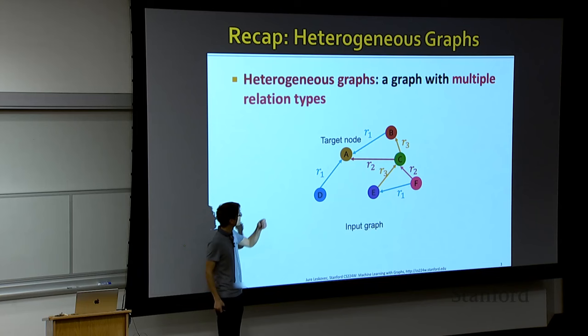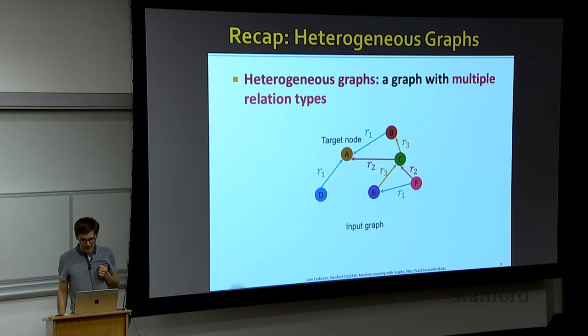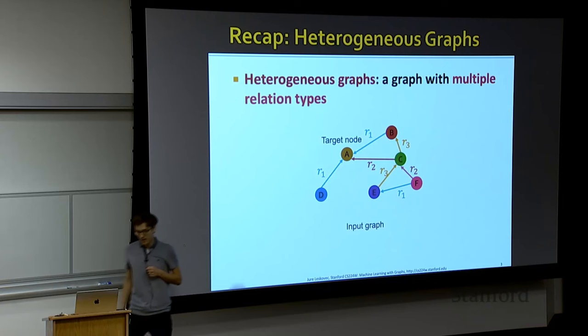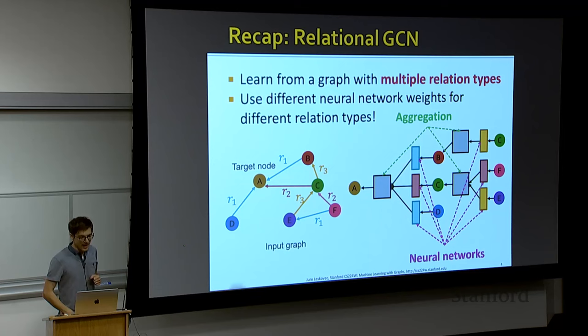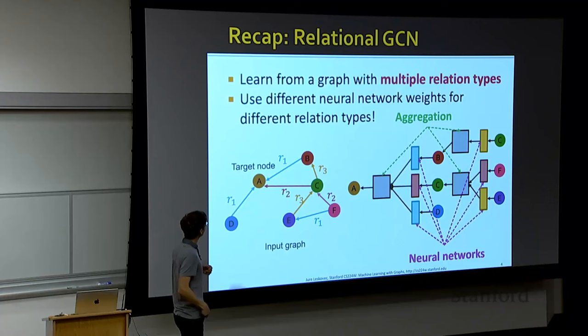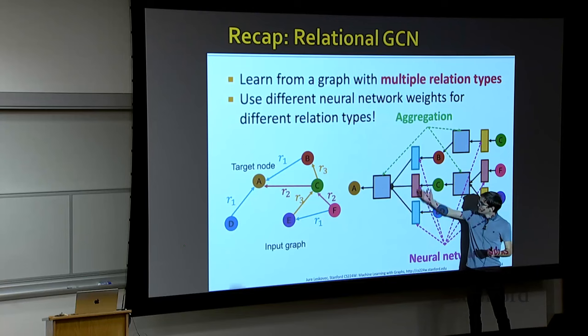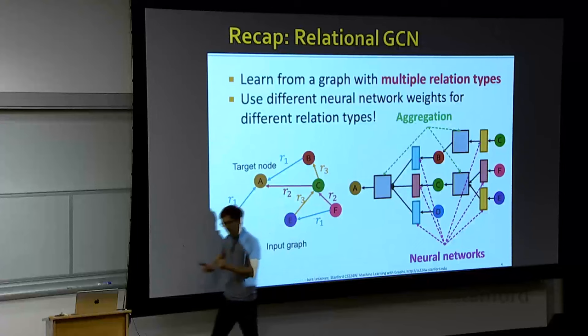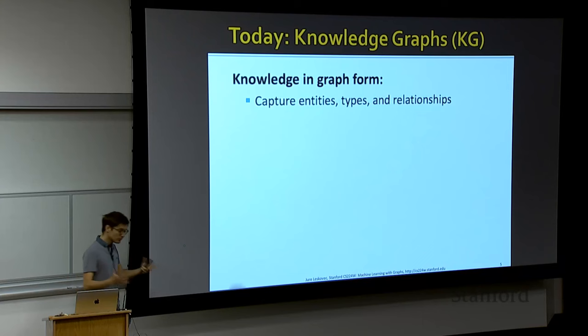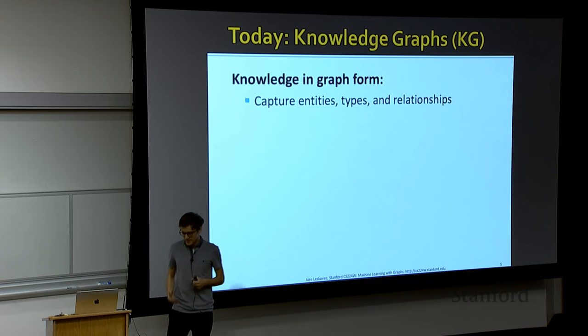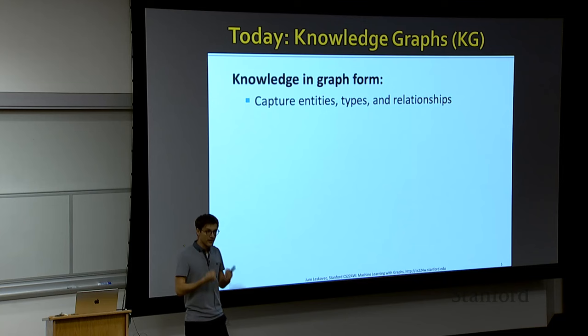What did we talk about last time? We talked about how do we generalize graph neural networks to heterogeneous graphs, where we have edges of different types and nodes potentially of different types. And we talked about relational GCN, where we learn from a graph with multiple relation types and use different neural network weights for different relation types. We basically took the GNN architecture but generalized it so that message passing functions are relation-specific, giving us more expressive power when working with heterogeneous graphs.